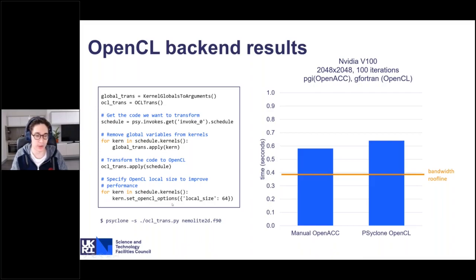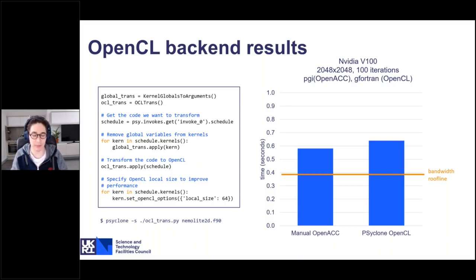That is enough to translate to OpenCL. However, it's very useful to also set a local size. In OpenCL, the local size is the number of data-parallel threads executed in the same CUDA core or AMD core simultaneously — this is how GPUs typically get their parallelism. The value 64 has turned out to be a good number for most architectures. That last step is necessary only for performance.